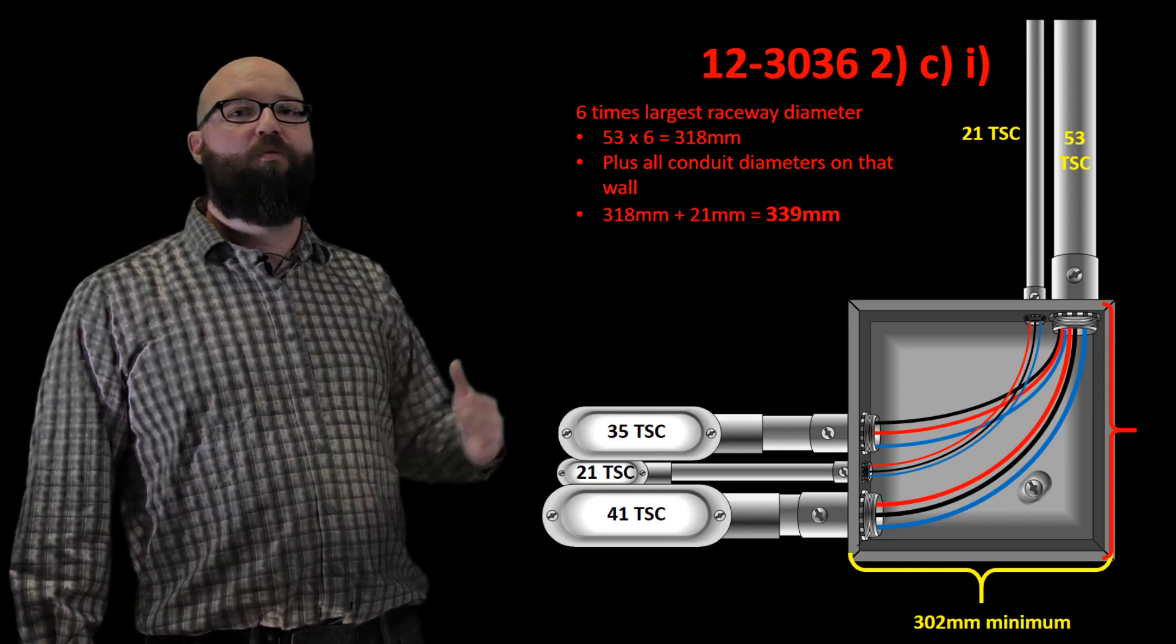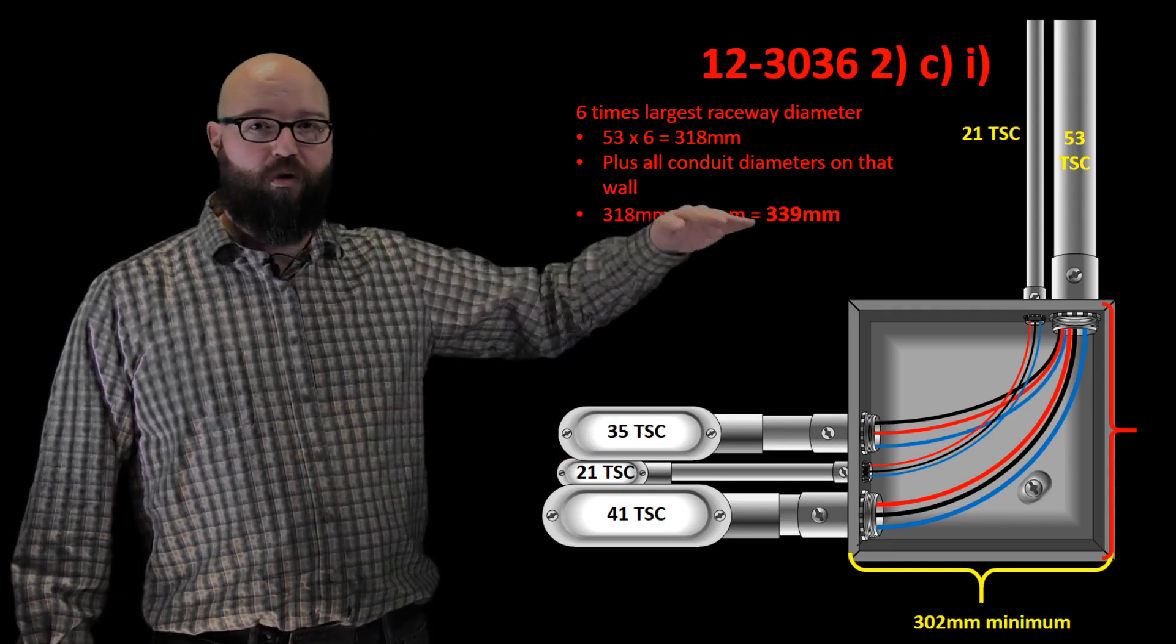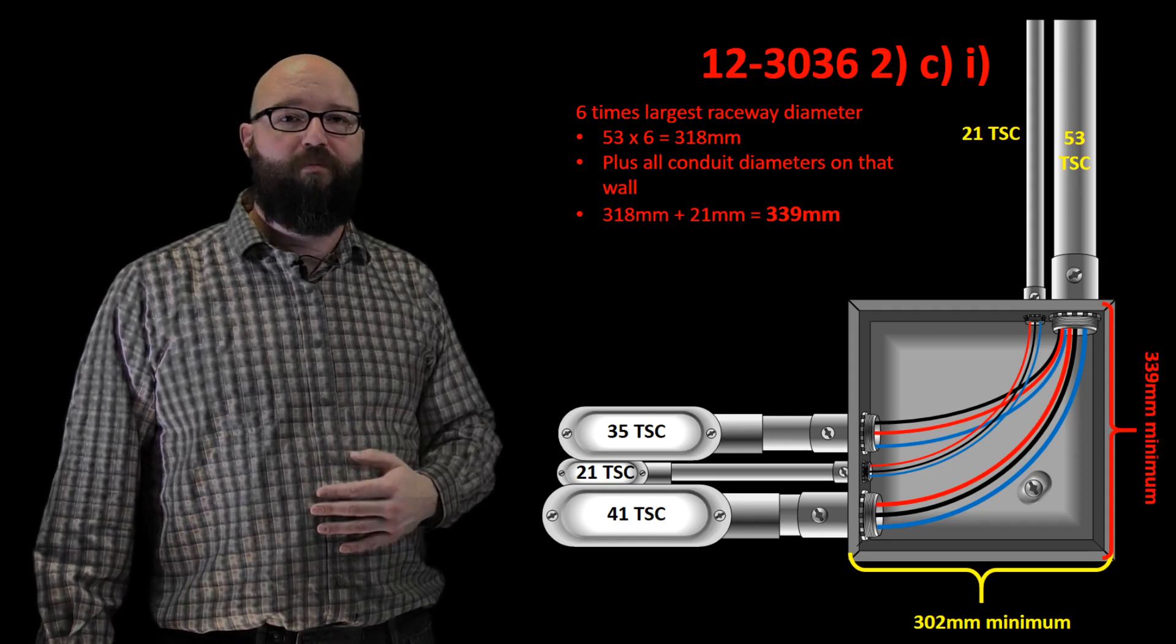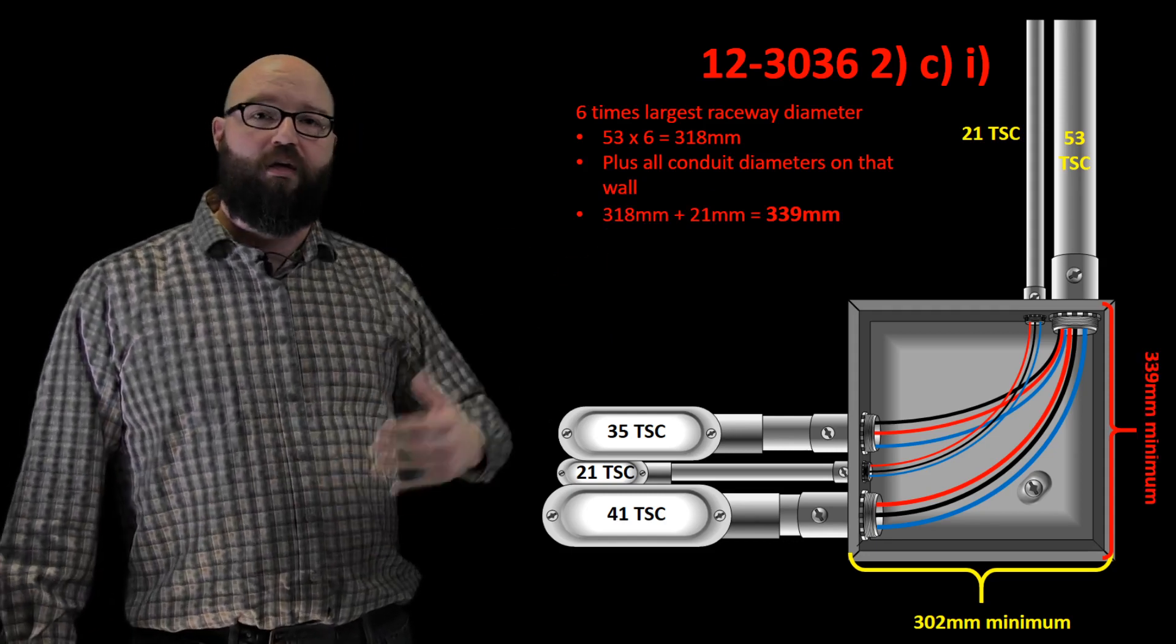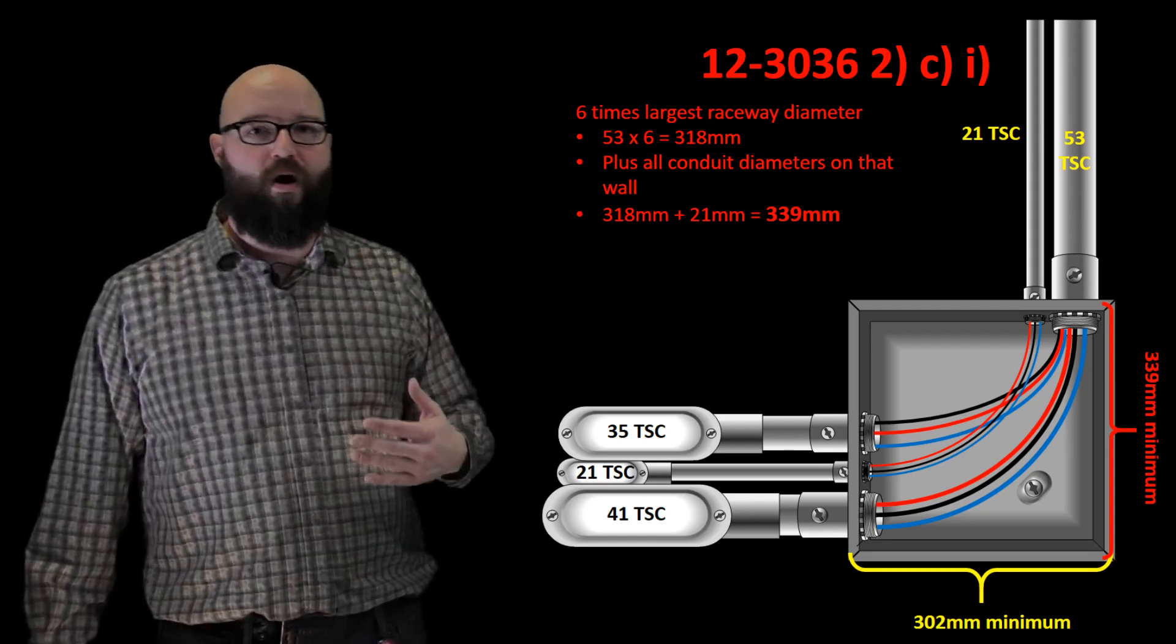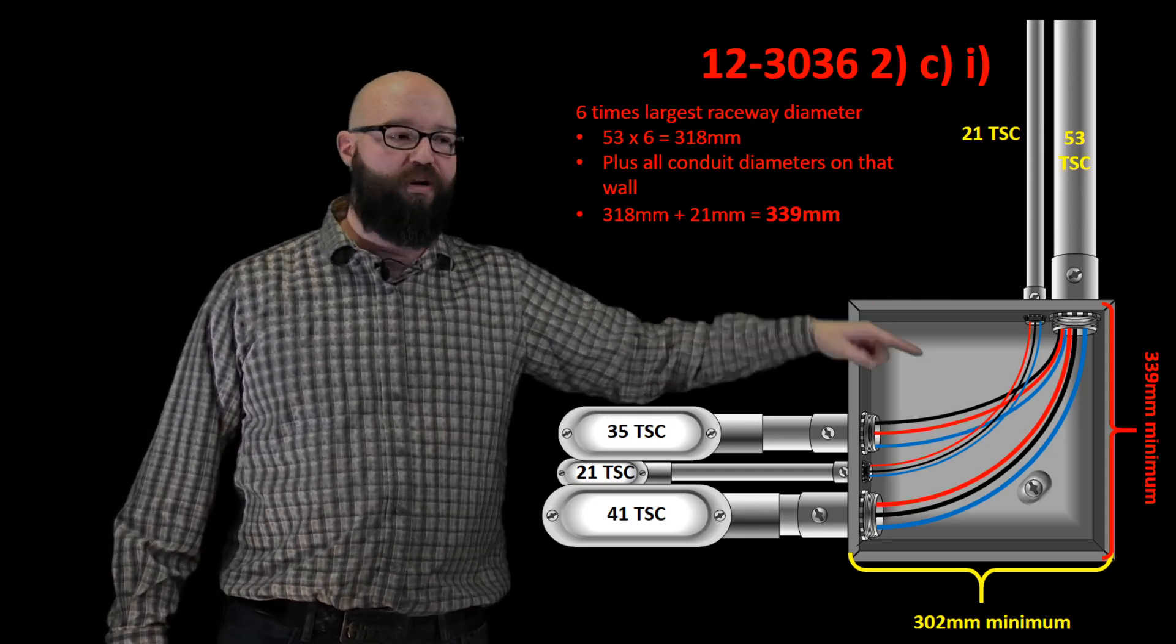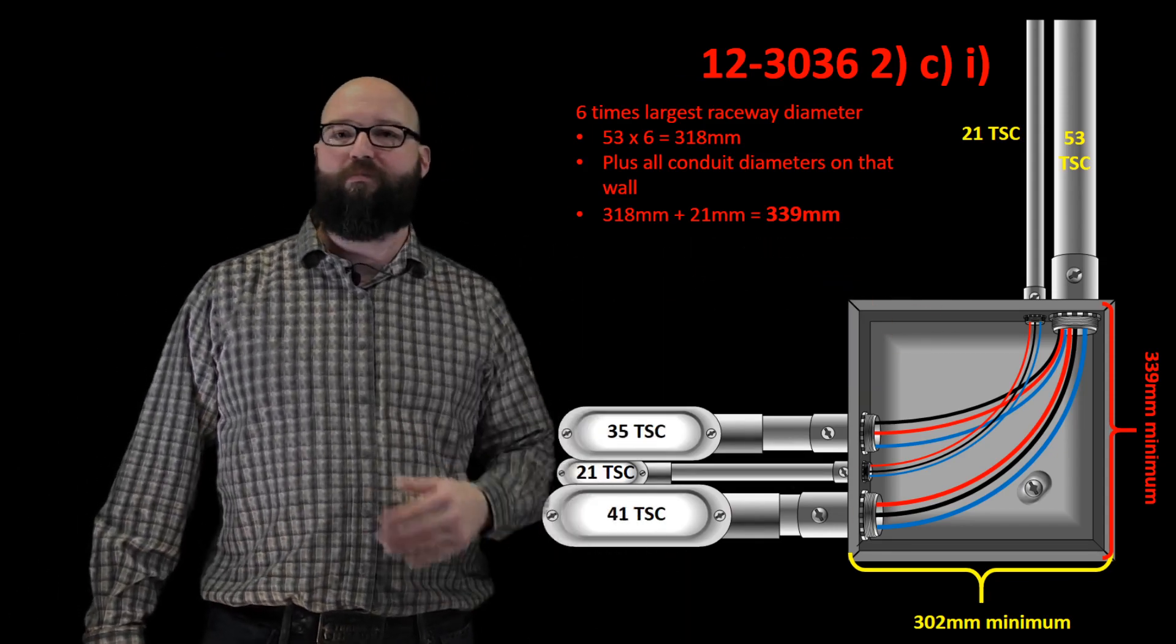When we're selecting our pull box, if we were going with a square, for example, this box would have to be a minimum 339 by 339 to follow 12-3036 properly. If we weren't going with a square, we could just say that the minimum dimension there would be 339 and the minimum dimension here would be 302.